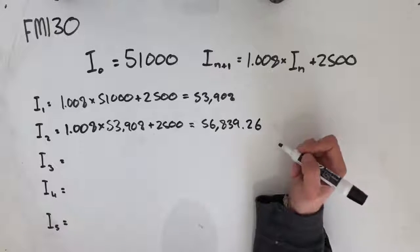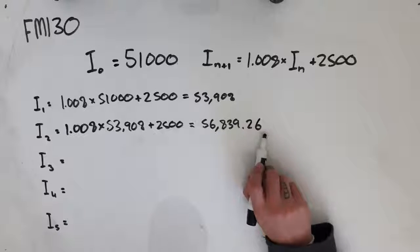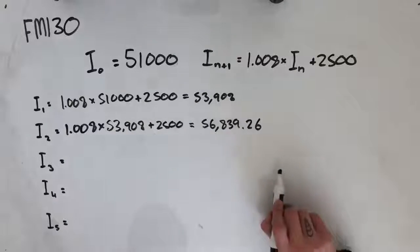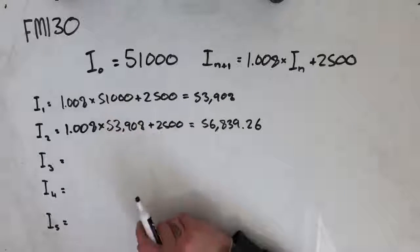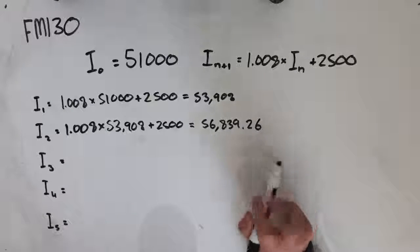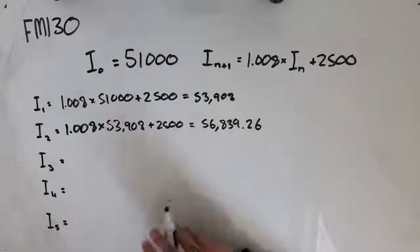Now, I've rounded to two decimal places here, guys, but if you're using a calculator, make sure that you're keeping the full amount, the full three decimals that come up in each of your sequences. And each time you calculate a new value of I, make sure that you're using the fullest, most accurate version of the number.